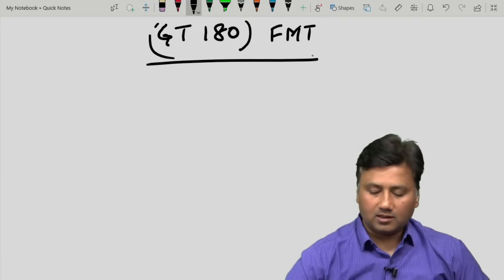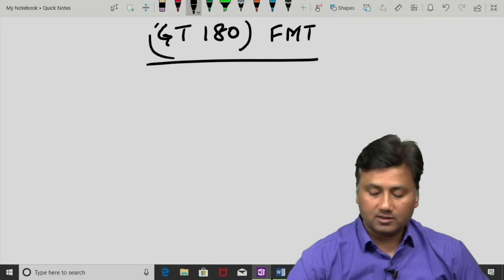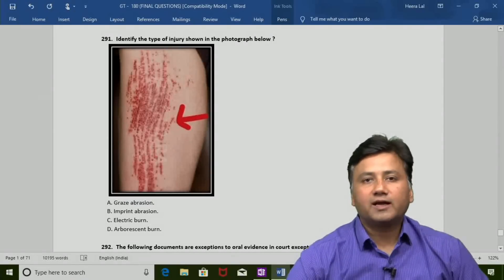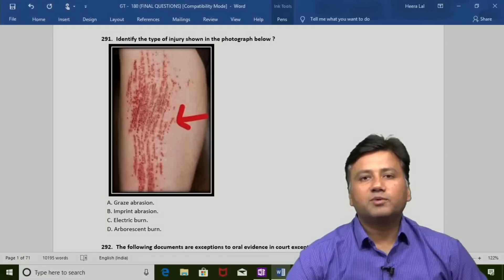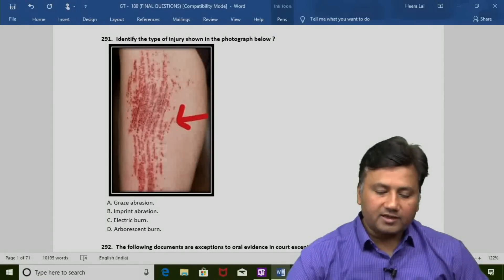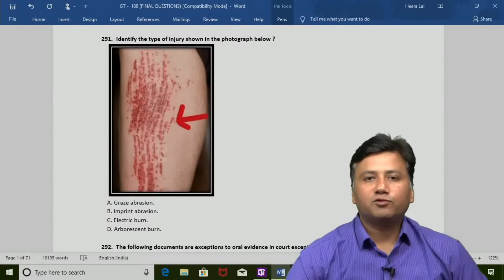We will be starting by picking up our first question, and that question is as you can see on the board, question number 291. We start from a picture-based question where the question that has been asked is identify the type of injury which is shown in the photograph.